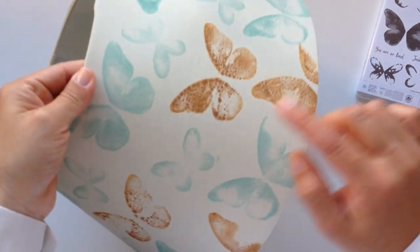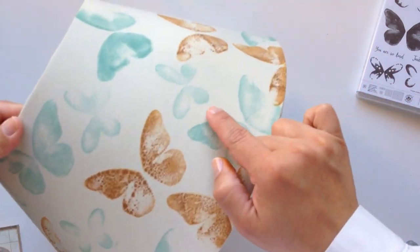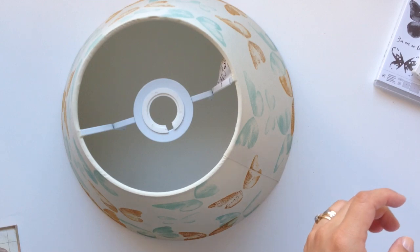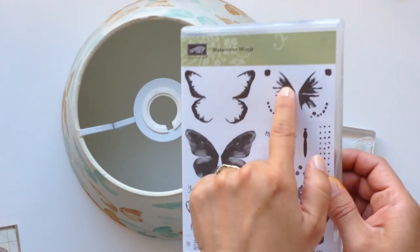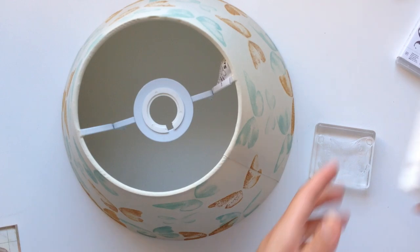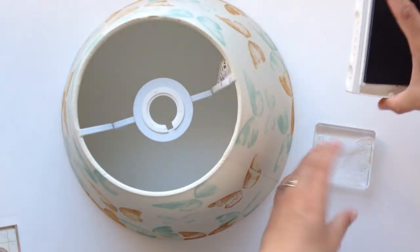This is how the lampshade is looking now after using two different inks and two different stamps. Now I'm going to use another stamp—this one here—and I'm going to use a gray ink.